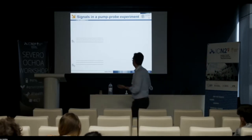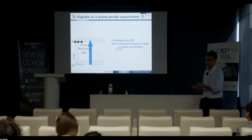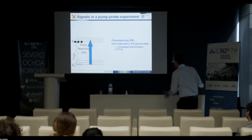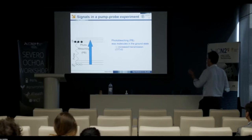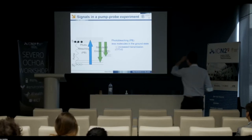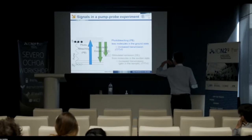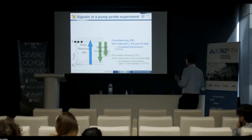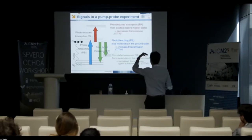For a two-level system, pump-probe can reveal three types of signals. First, photo-bleaching: the pump promotes molecules from ground to excited state, reducing absorption at the pump frequency — giving a positive differential transmission signal. Second, stimulated emission: tuning the probe to lower energy than the band gap reveals optical gain from the excited state. Third, photo-induced absorption: from the excited state, the system can absorb to higher-order states.